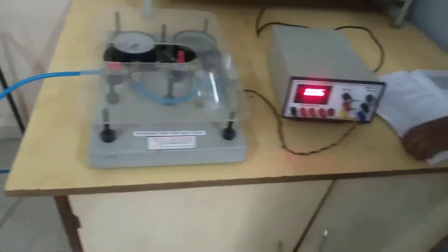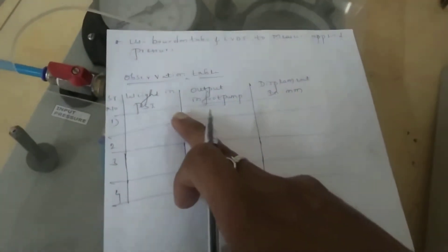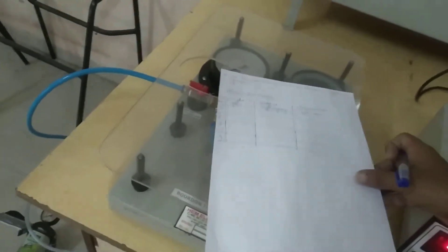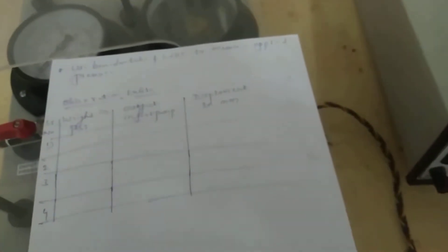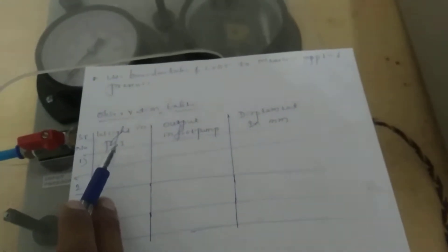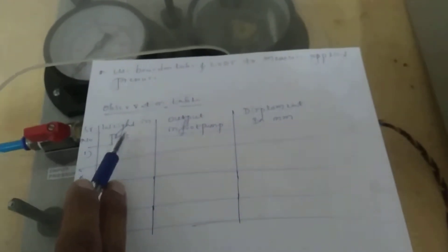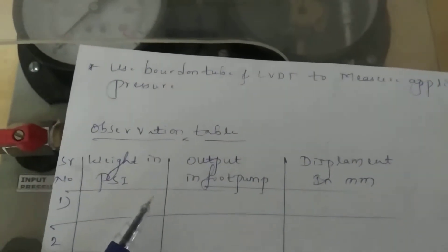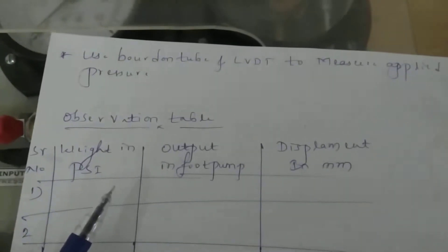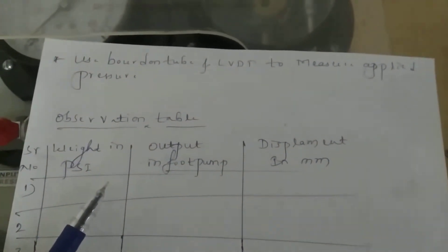So first we will take the reading. The output is from the foot pump, and the third column is displacement in mm. First I am going to apply the weight in PSI — that is pounds per square inch, or in terms of kg per centimeter square. The range you are getting from the pressure gauge is 0 to up to 150 PSI. So the first reading is 20 PSI. In the British system you measure in terms of PSI — pounds per square inch.